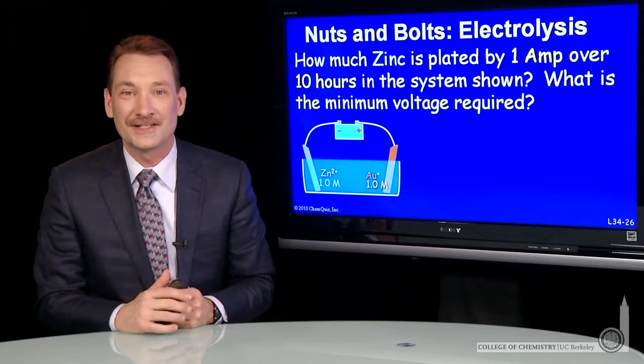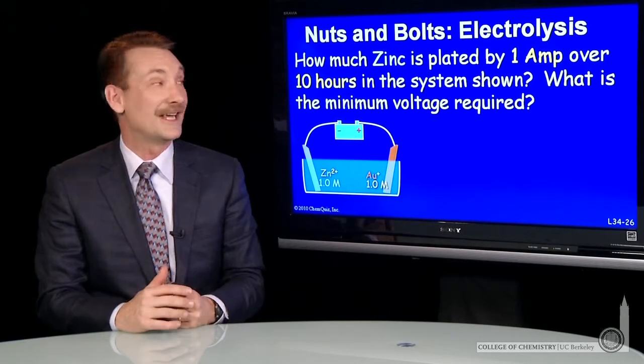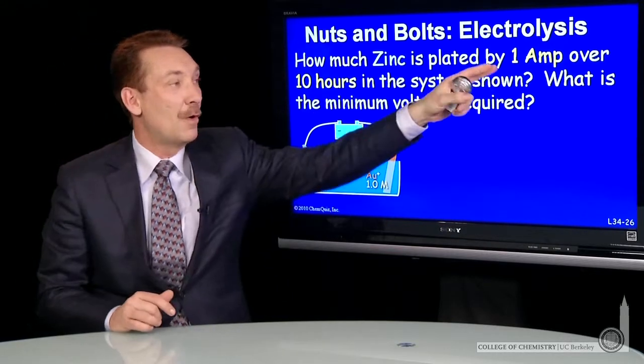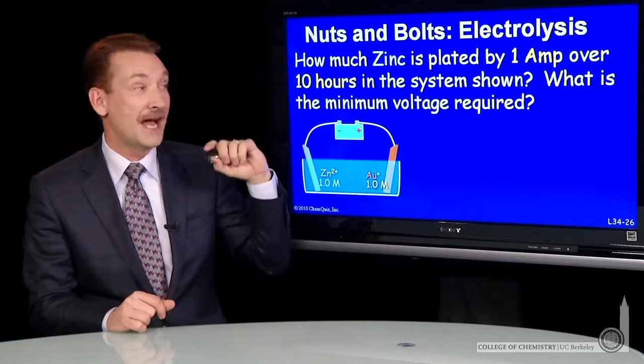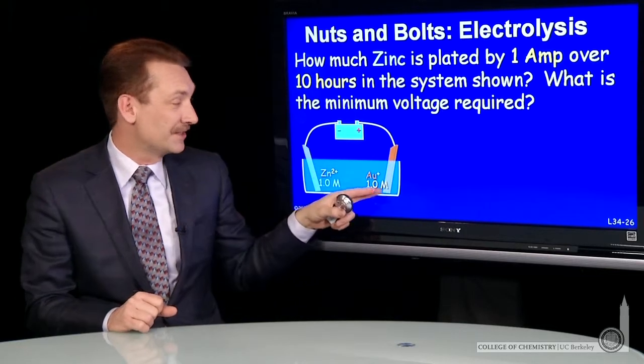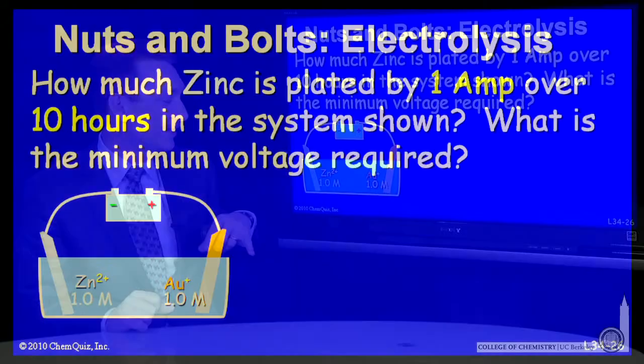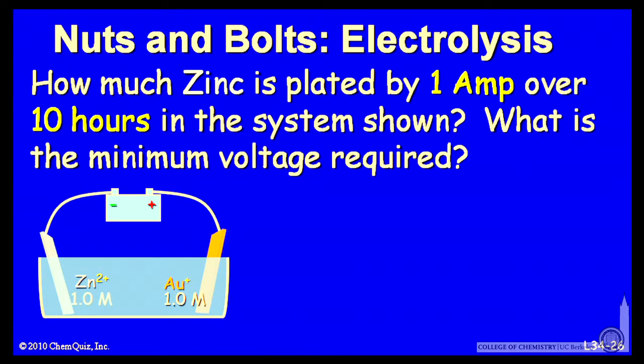Let's construct an electrolytic cell with gold and zinc. How much zinc is plated out if you allow 1 ampere of current to flow for 10 hours in this system with a gold electrode and 1 molar gold, a zinc electrode and 1 molar zinc ions, and what's the minimum voltage required?